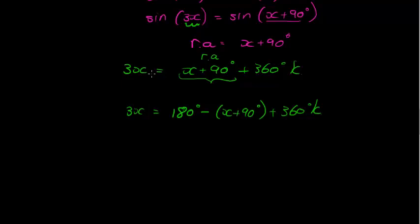My next step would be to just solve for x. But this time I see there's an x on both sides. So I'm going to subtract an x on this side, subtract an x on that side. To get that 2x is equal to 90 degrees plus 360 degrees times k. Which means x is equal to, divide both sides with two, to get 45 degrees plus 180 degrees times k.